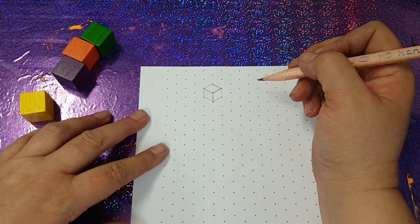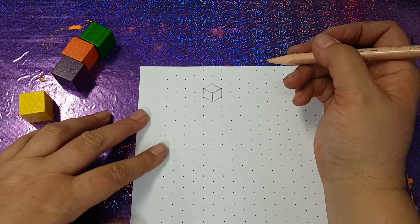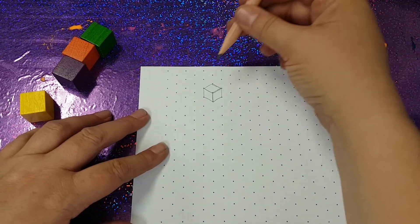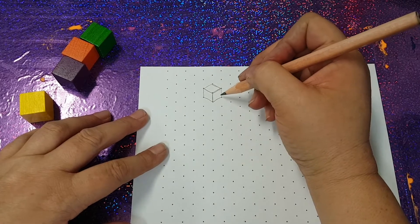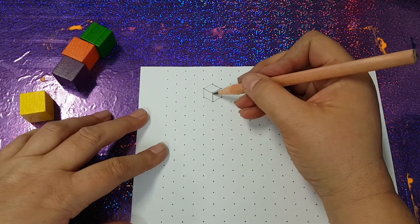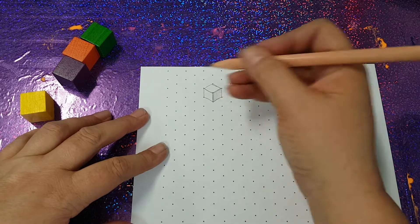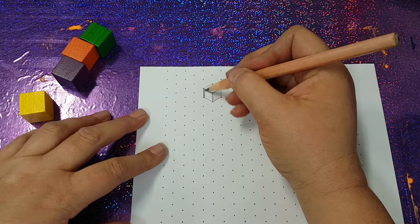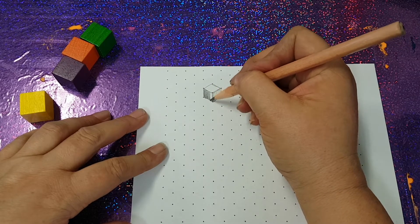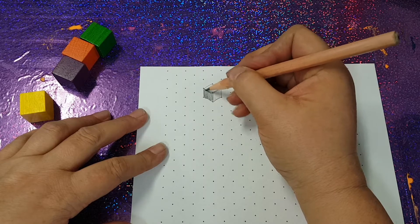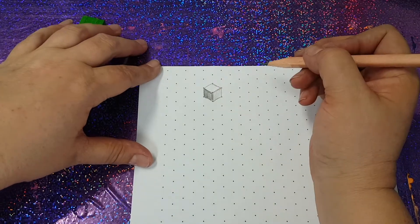Now looking pretty cool. It's looking like a cube but to make it even cooler we're going to give it a bit of shadow. So if we've got the sunlight coming down from the top here then the top would be white because that's where most of the light is falling. This side would be a light grey and then this side would be a darker grey.